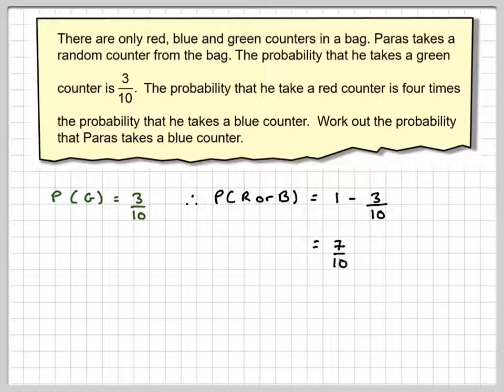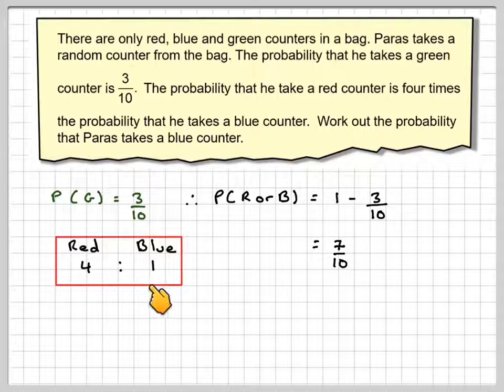Now, what we need to do is look at the ratio of red to blue. The probability that it takes a red counter is 4 times the probability it takes a blue counter. So it's going to be the ratio of 4 to 1.